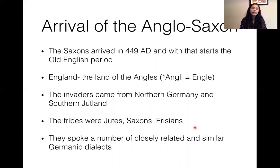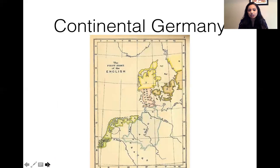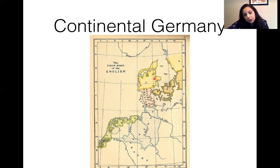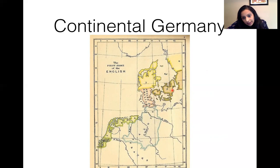The language that was spoken was similar to Germanic, and there were different dialects of Germanic. Here is a map of continental Germany — this was really the first home of the English before they invaded England. You can see Jutland, the Angles, the Frisians, the Danes — all the Germanic tribes that invaded England from mainland Europe or continental Germany.